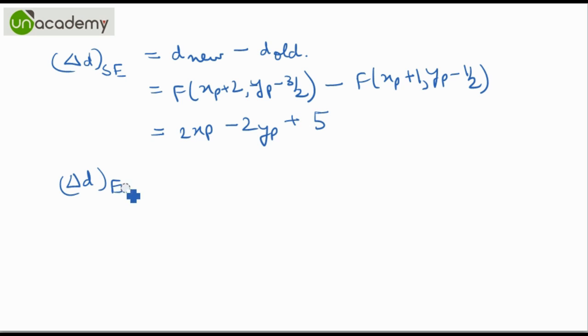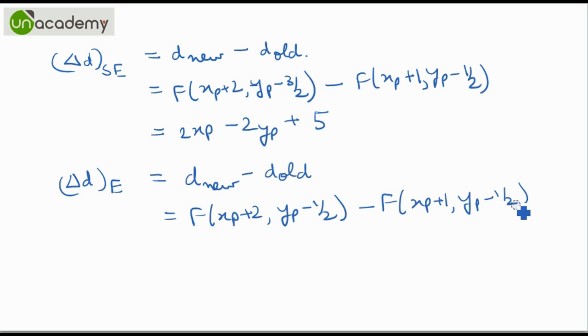Similarly, what will be the change when an East point is selected? That is the new minus the old. That will be F of (XP+2, YP-1/2) minus F of (XP+1, YP-1/2). This will evaluate to 2 times XP plus 3.